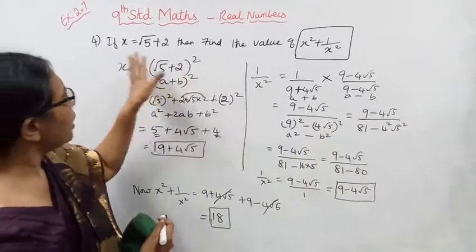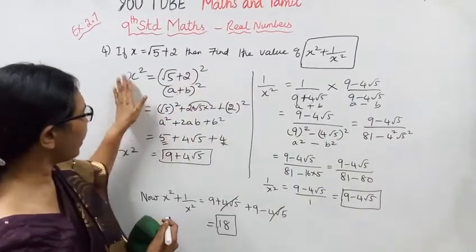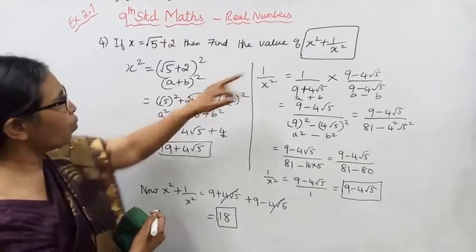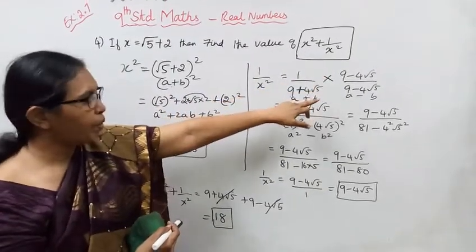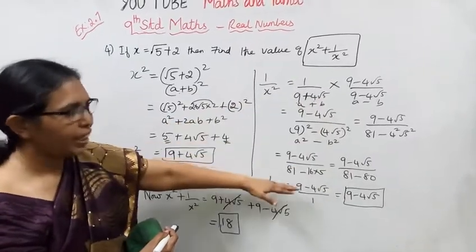To summarize: we found x², then found 1/x² by multiplying by the conjugate and dividing. That equals the answer.